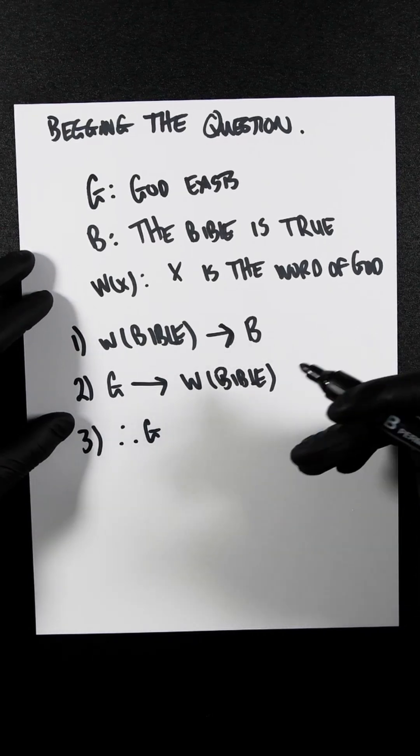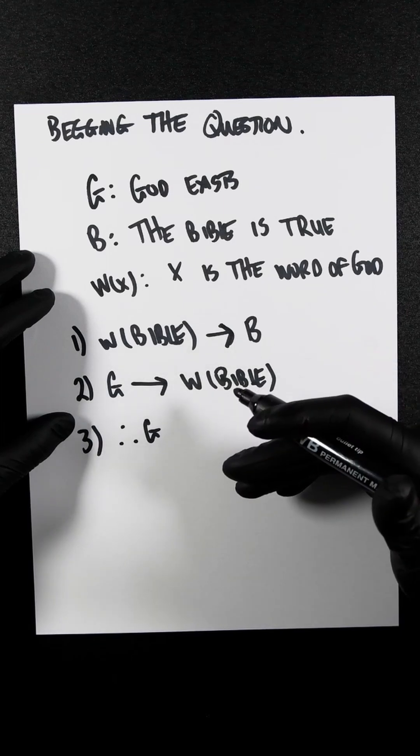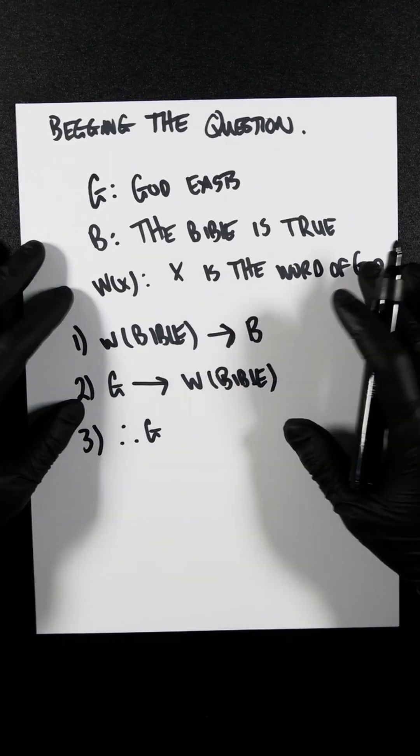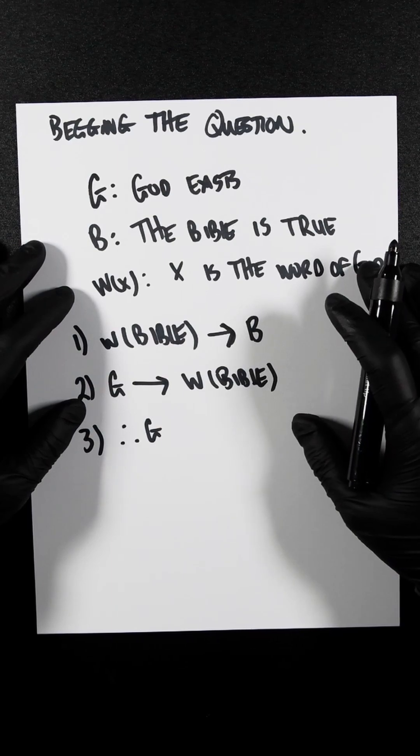In begging the question, P(X) essentially is being used to prove P(X). There is no external justification or inference.